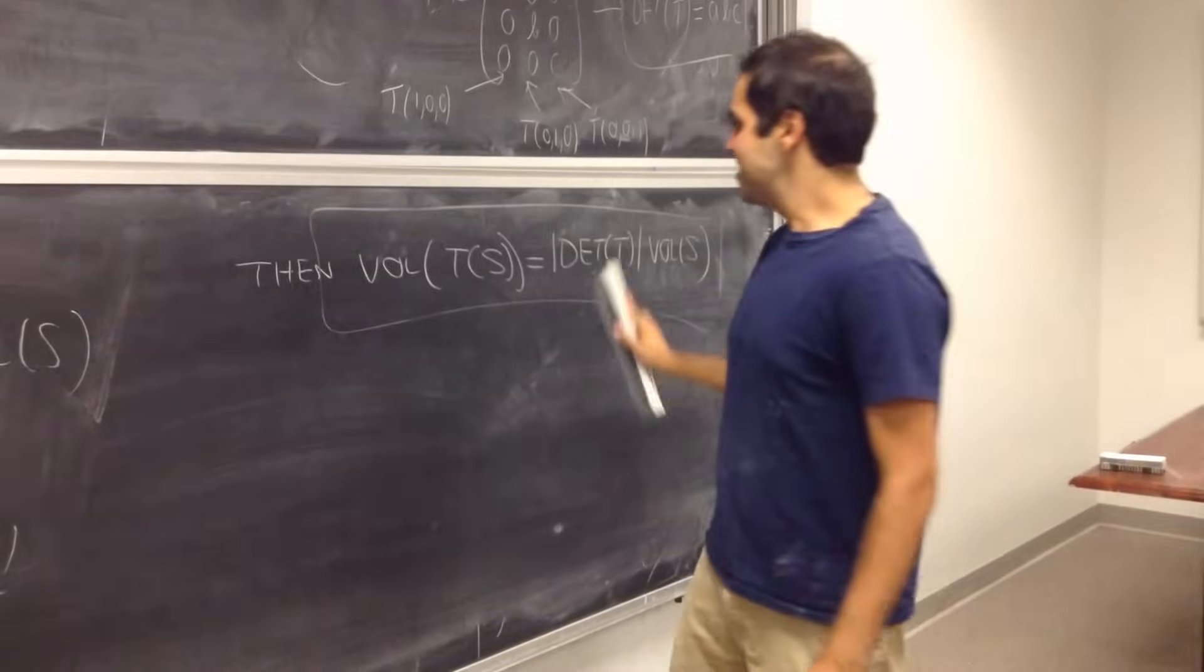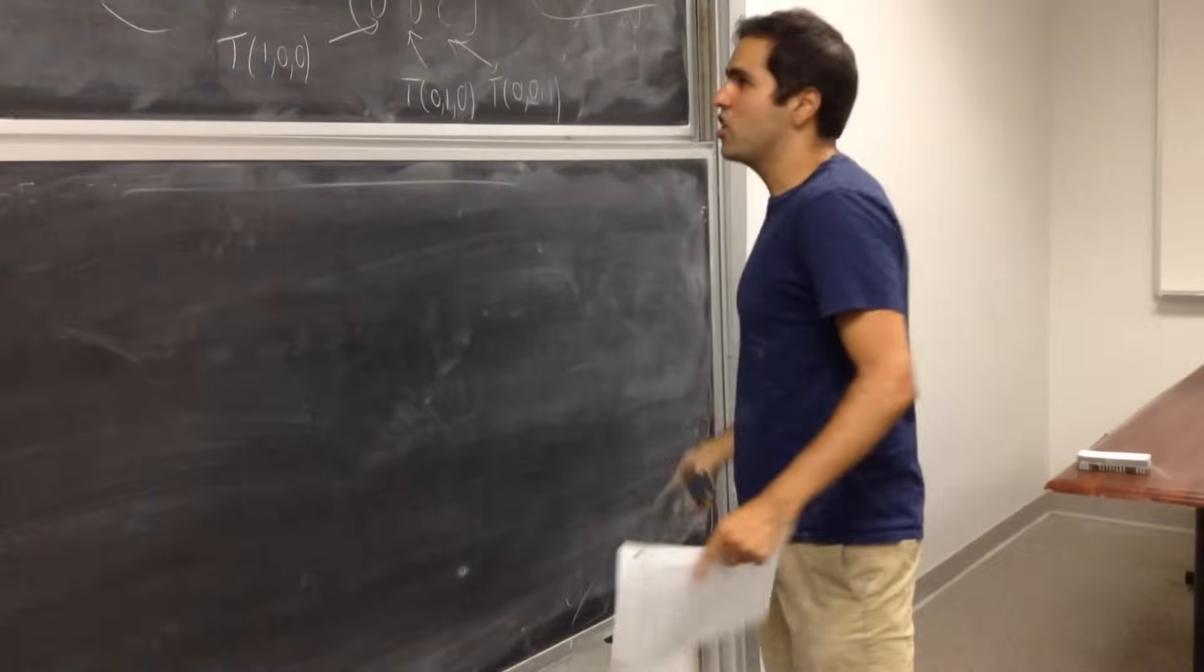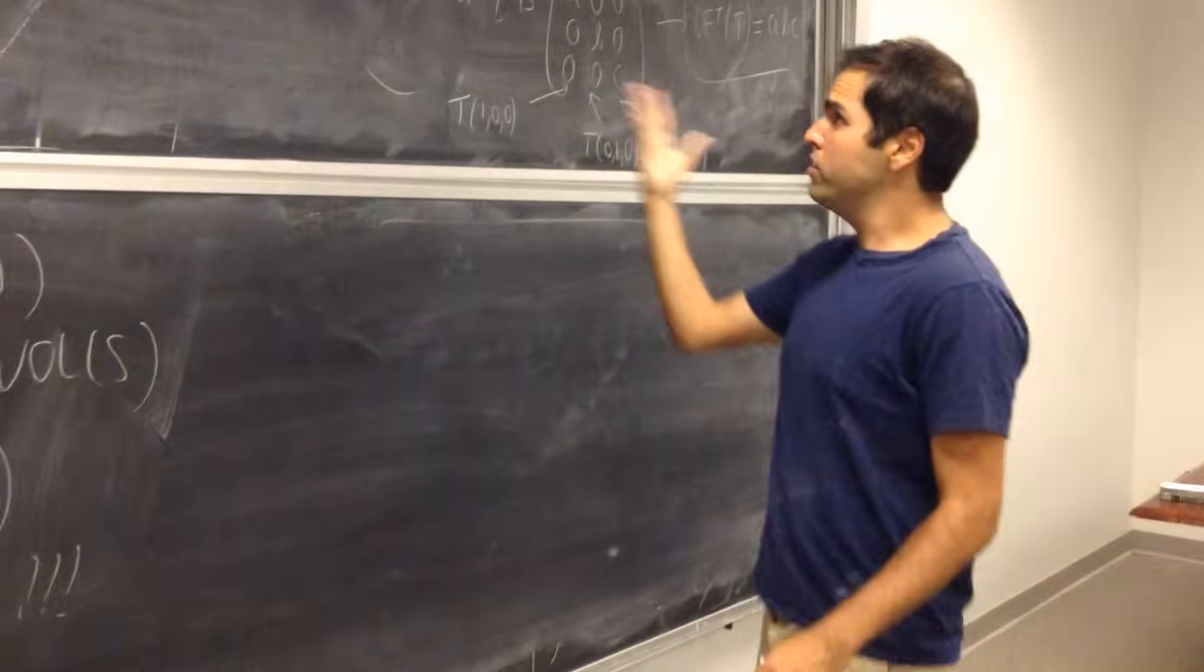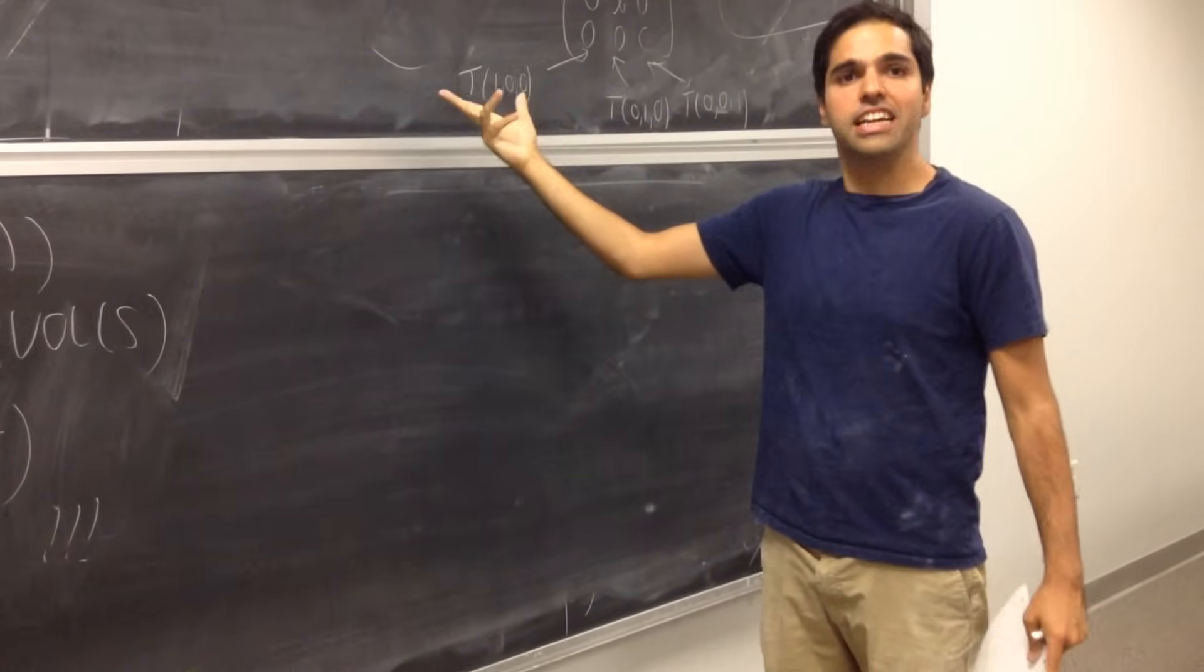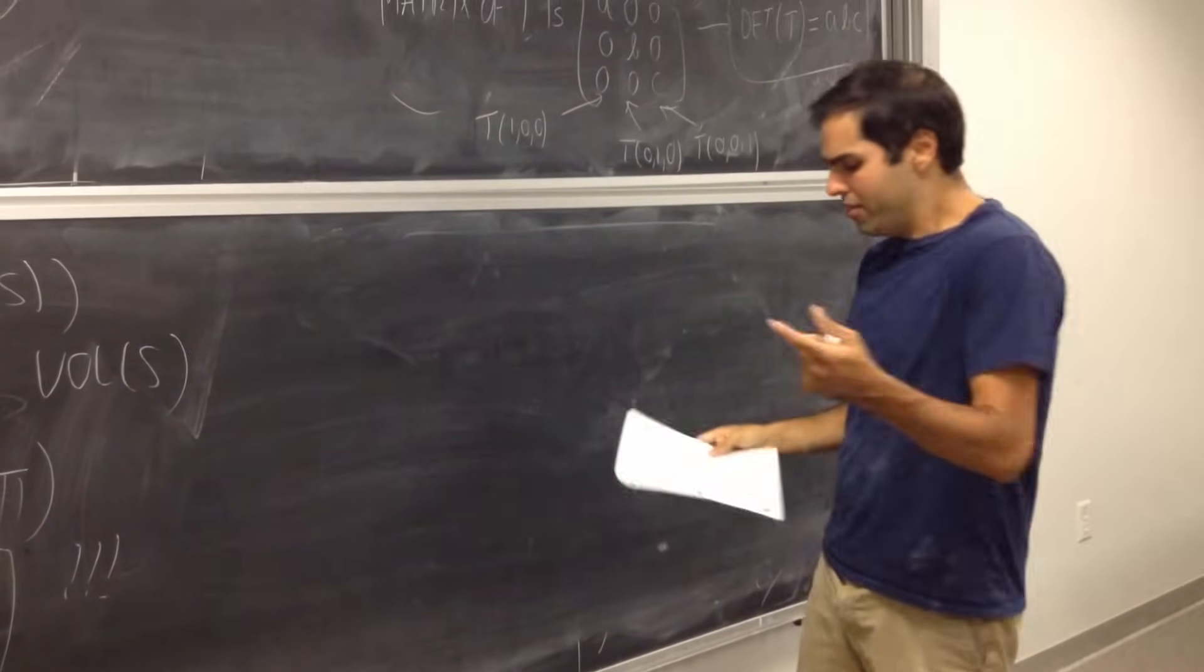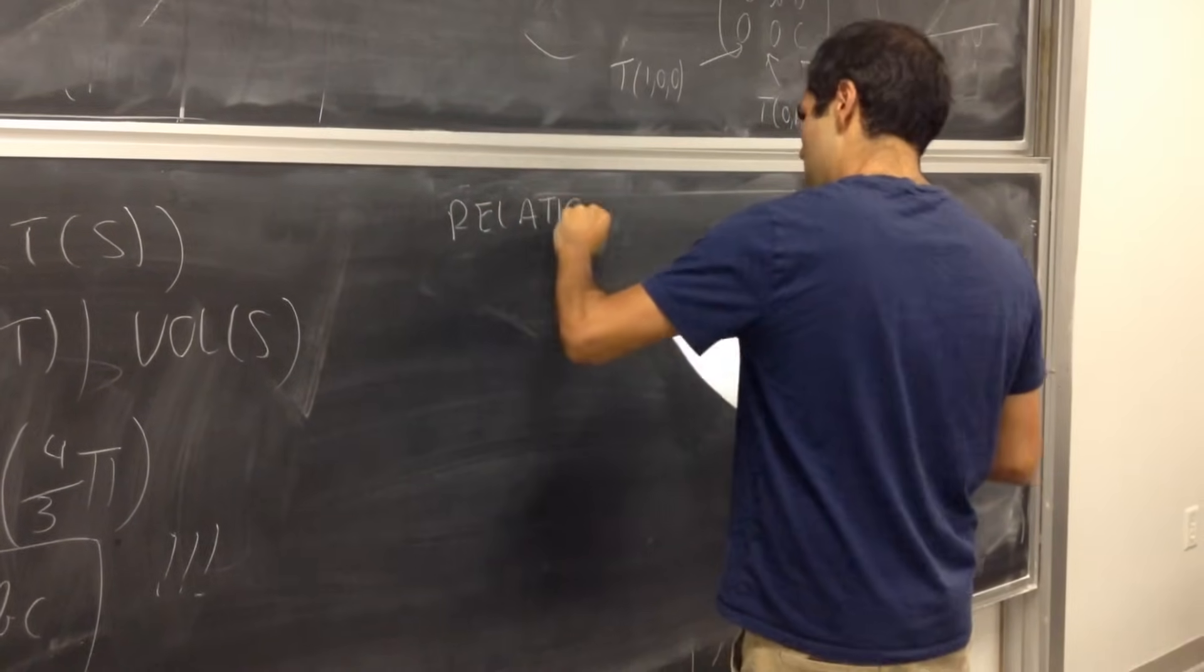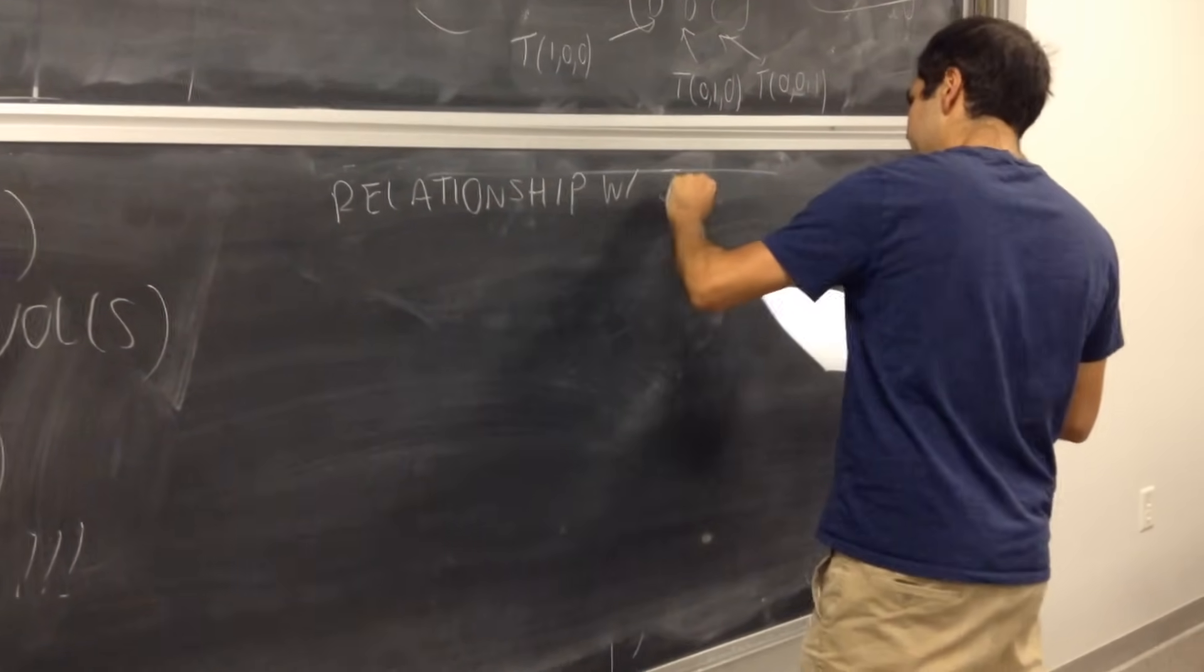And one last thing, because someone asked, what about the Jacobian? Because, why not? Okay, because notice, when you talk about the Jacobian, you also have this determinant in the formula. And let me just quickly explain why you get this determinant. So, relationship with Jacobian.